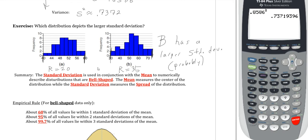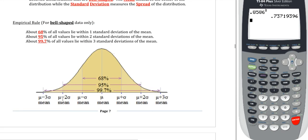In summary, standard deviation is used in conjunction with the mean to numerically describe distributions that are bell-shaped. The mean measures the center, and the standard deviation measures the spread. If the data is not bell-shaped, we have other ways of measuring the center and spread — we already talked about using the median for skewed data, and we'll get to how we describe spread for skewed data later.